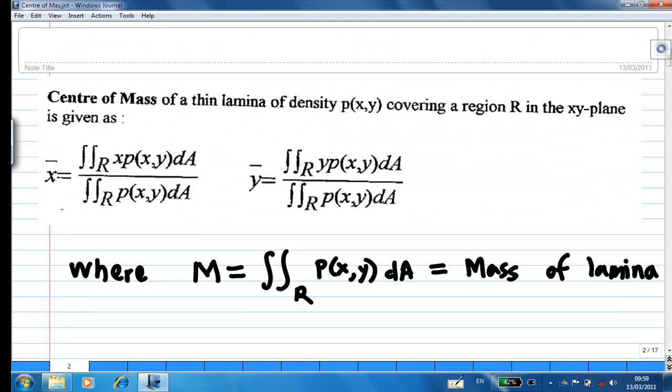To compute the center of mass or the center of gravity of a thin lamina of density ρ(x,y) covering a region R in the xy plane is given by this formula. The denominator is actually the mass of the lamina.